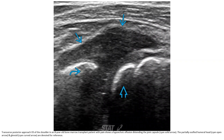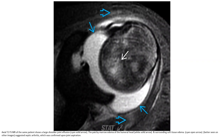Transient posterior approach for imaging of the shoulder in an eight-year-old bone marrow transplant patient. We can see a hypoechoic effusion with the distending joint cartilage. On T2-weighted MRI of the same patient, there is a large shoulder joint effusion with bony marrow edema of the humeral head and surrounding soft tissue edema, suggesting septic arthritis, which was confirmed upon joint aspiration.